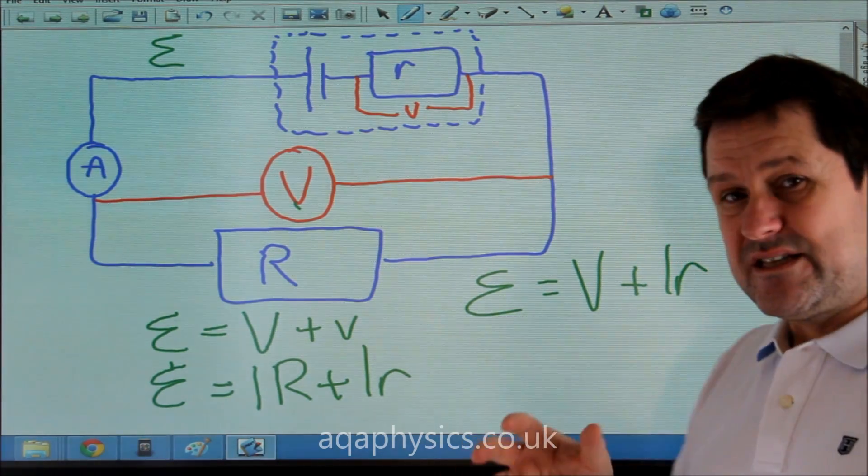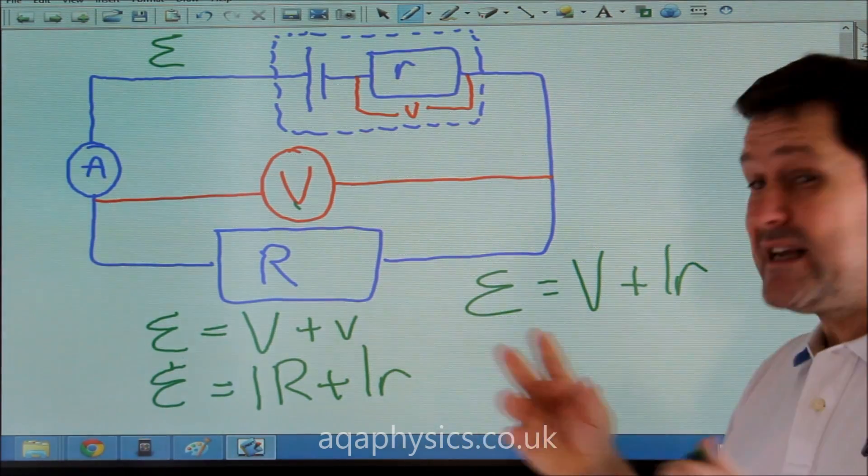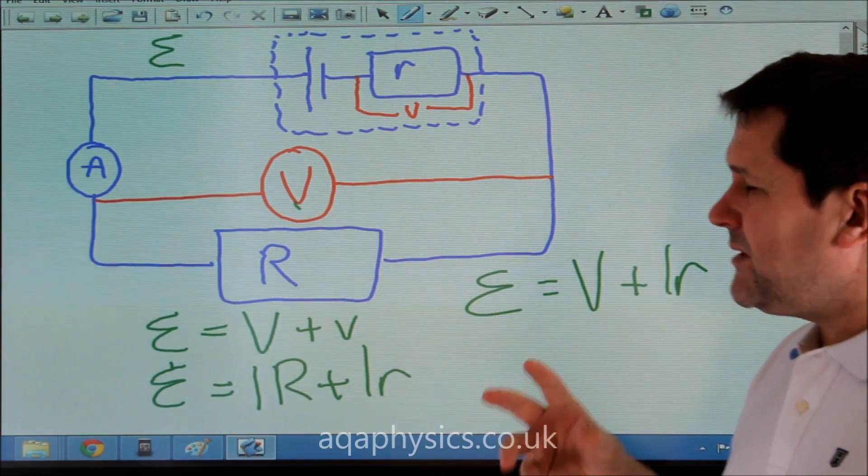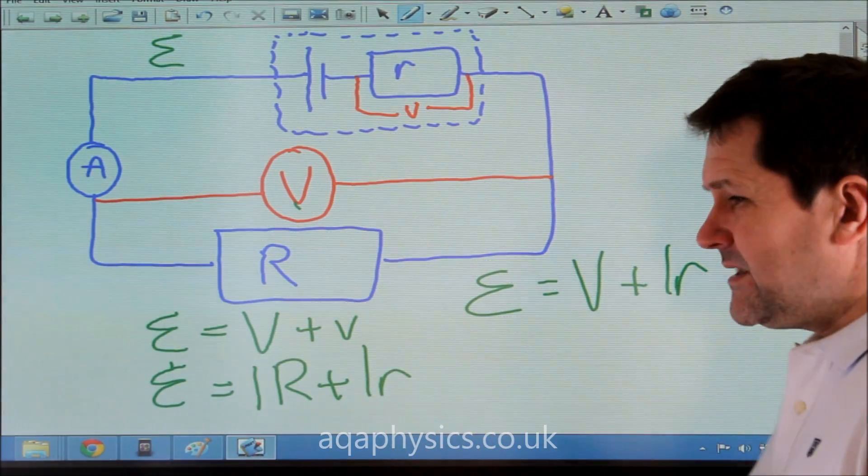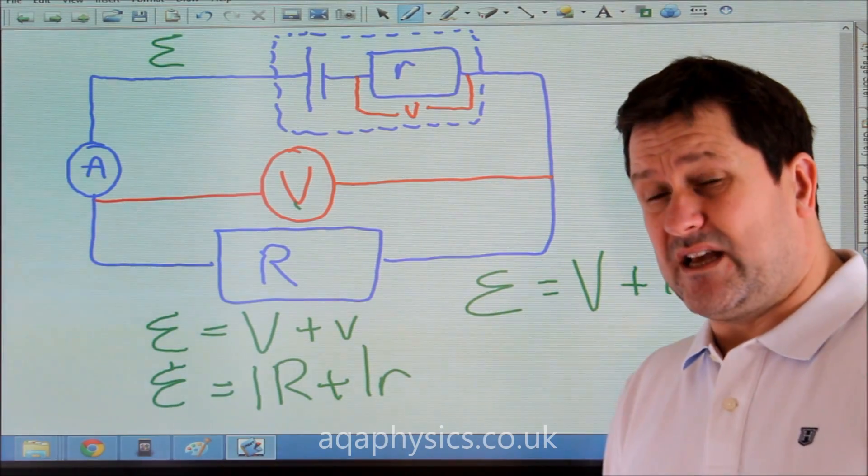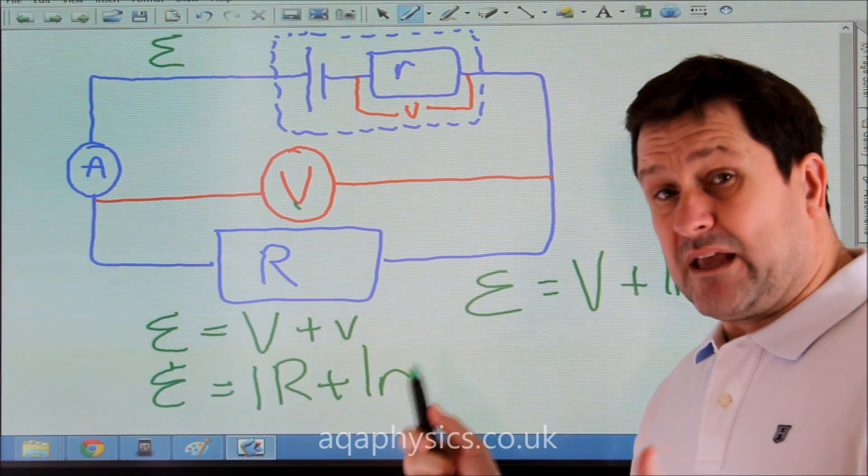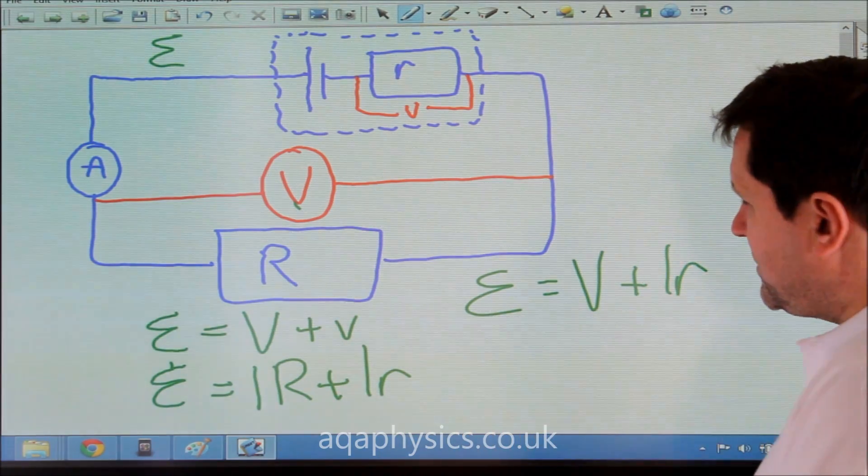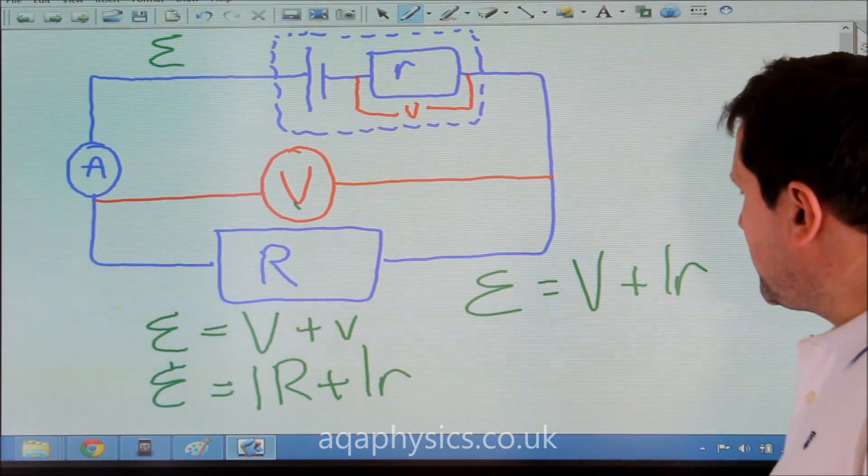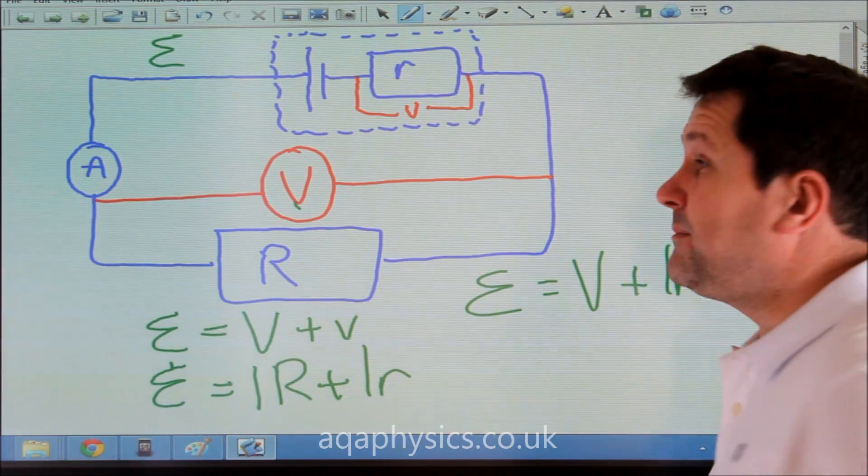We could have this in an exam problem. A typical exam problem would use this graphically and as part of a circuit problem such as this. So if we were to be given it graphically, we might be asked to use something like this, where epsilon equals V plus I r.